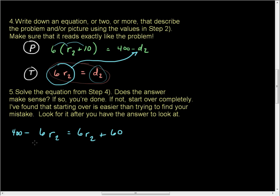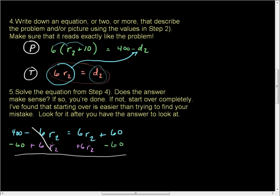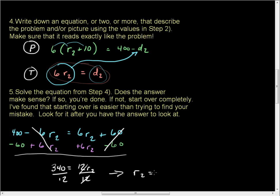I'm going to get all of my variables on one side — I always choose to make them positive. So I'm going to add 6R2 to both sides and subtract 60 from both sides, moving all variables to one side and all numbers to the other. The negative 6R2 and 6R2 cancel. The 60 and negative 60 cancel. So I'm left with 340 equals 12R2. Now I can find R2. I divide by 12, and I get R2 equals 340 divided by 12. As a fraction that's 85 thirds, which is also 28 and 1 third, or 28.3 repeating.